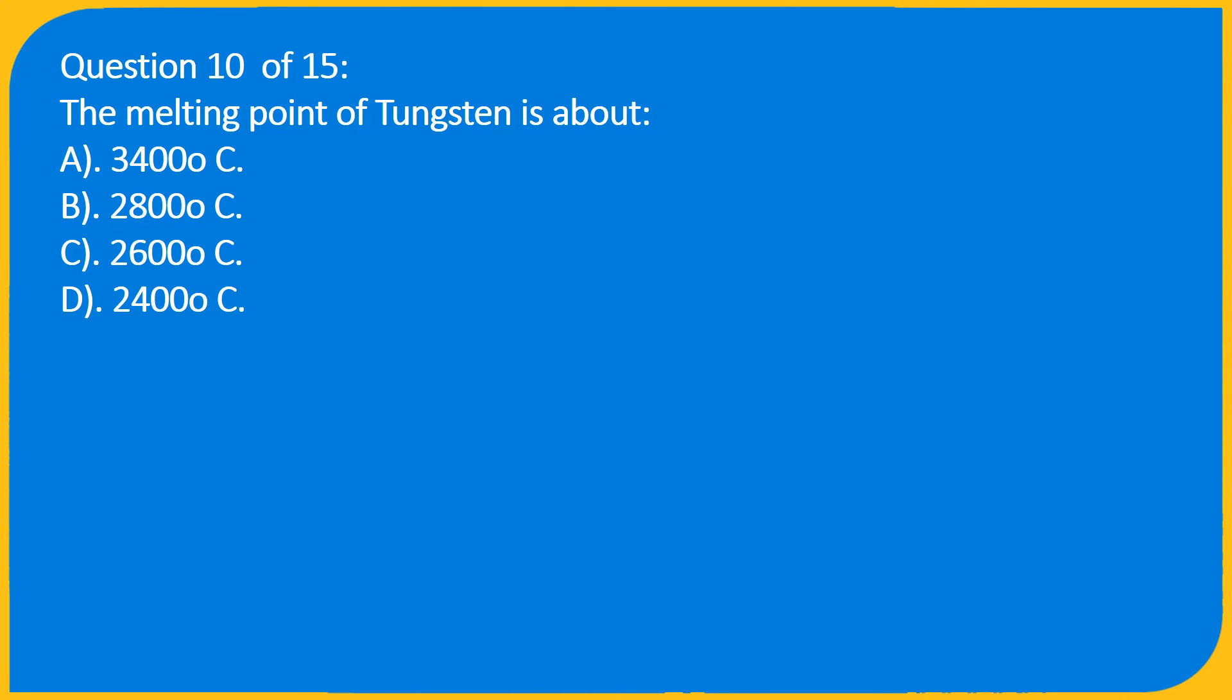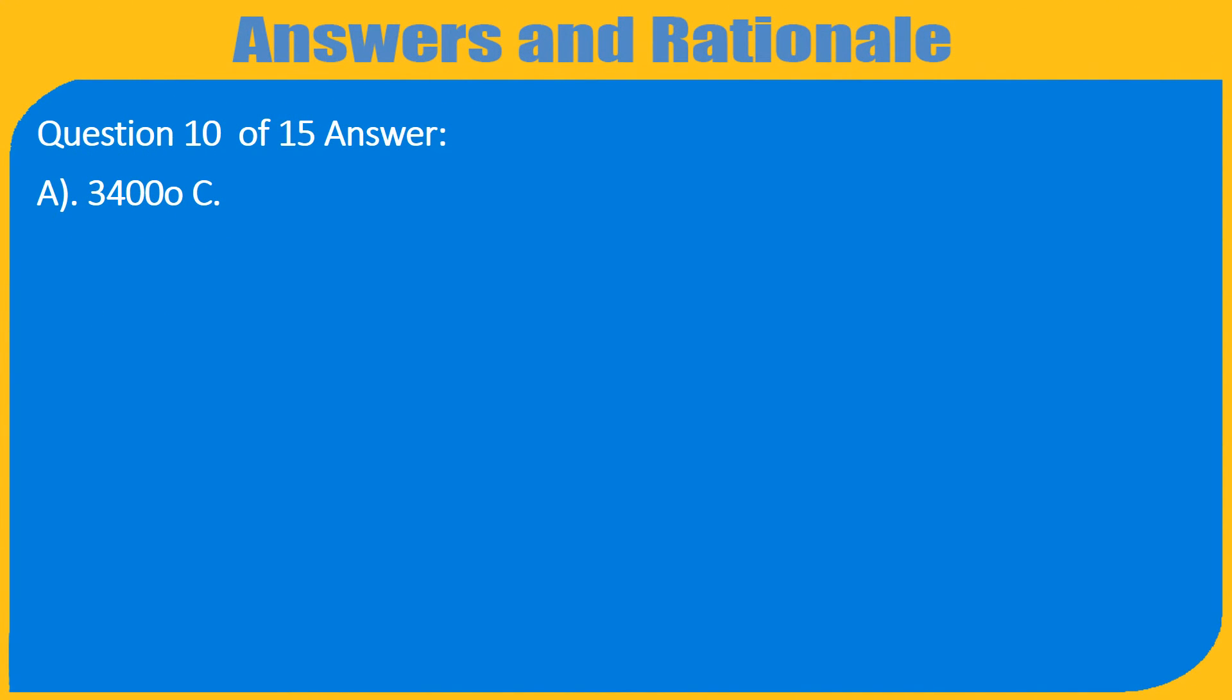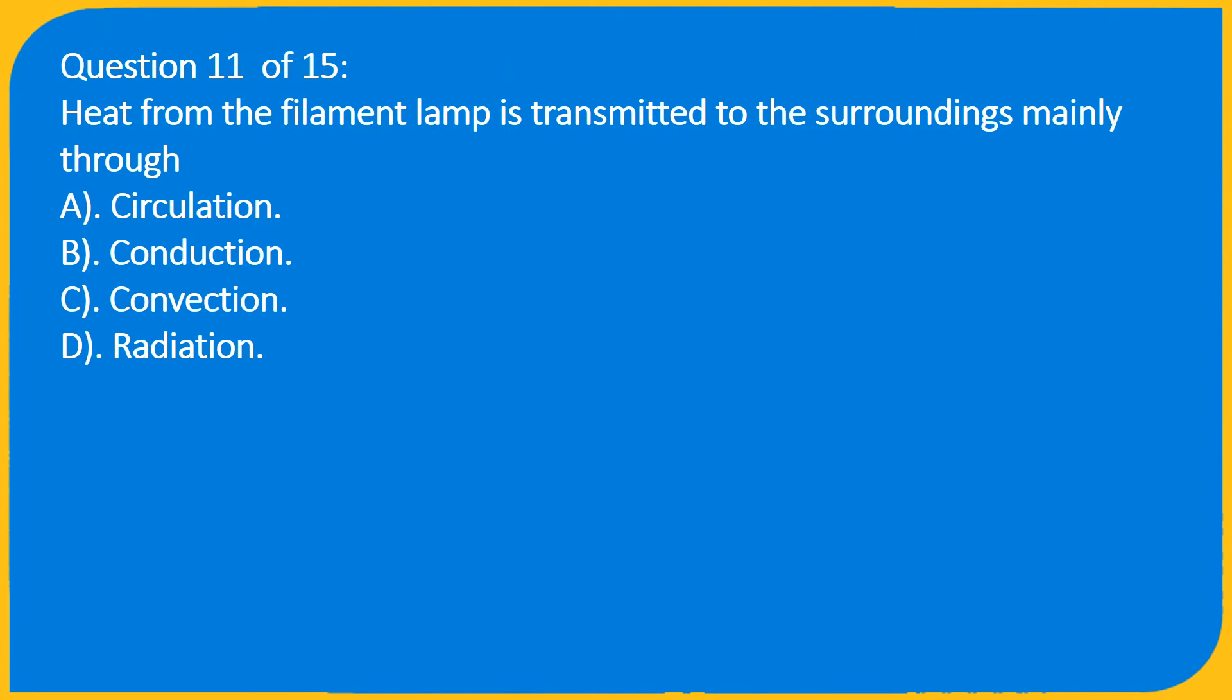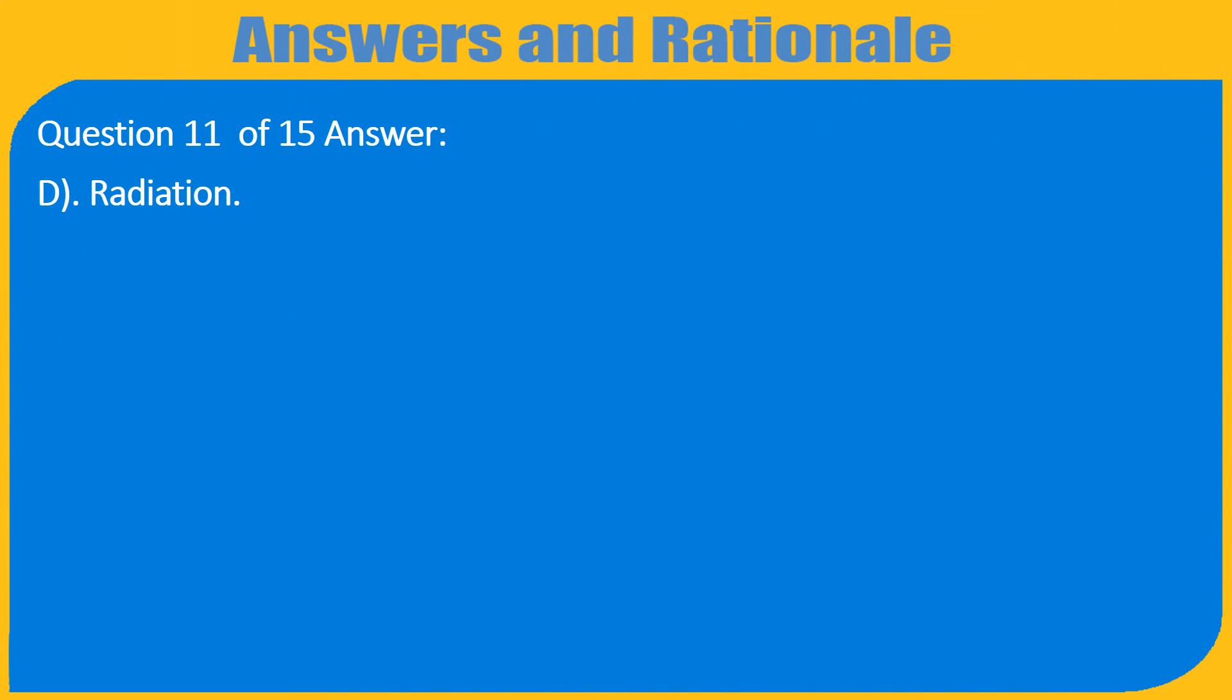Question 10 of 15: The melting point of tungsten is about A. 3400°C, B. 2800°C, C. 2600°C, D. 2400°C. Question 11 of 15: Heat from the filament lamp is transmitted to the surroundings mainly through A. Circulation, B. Conduction, C. Convection, D. Radiation. Answer: D. Radiation.